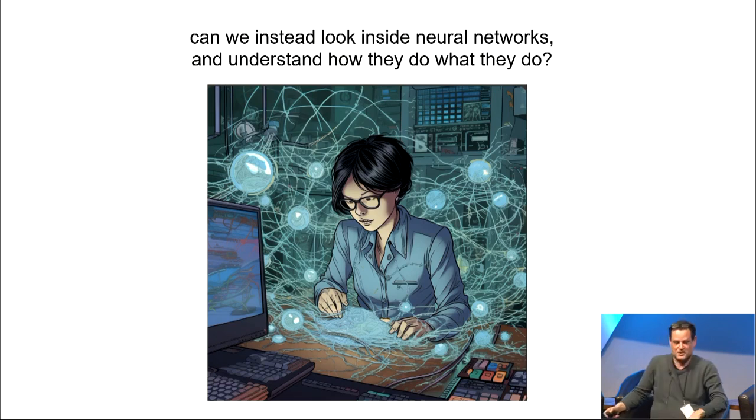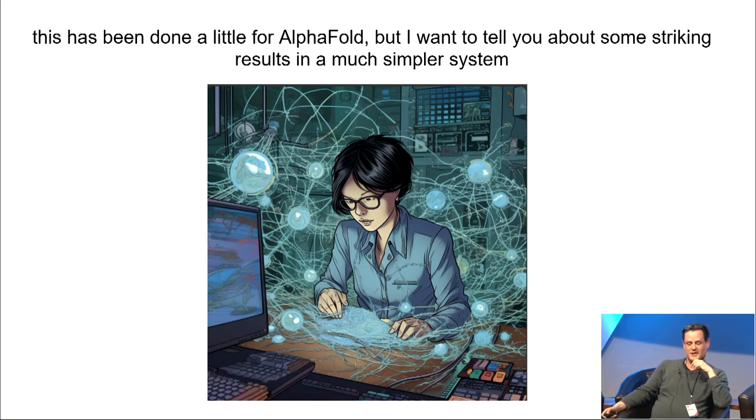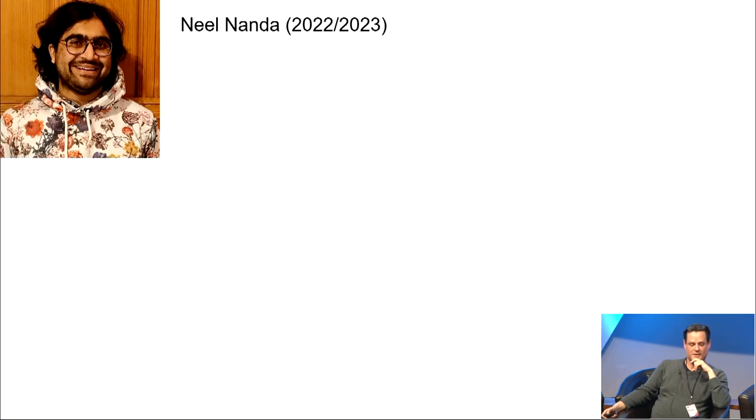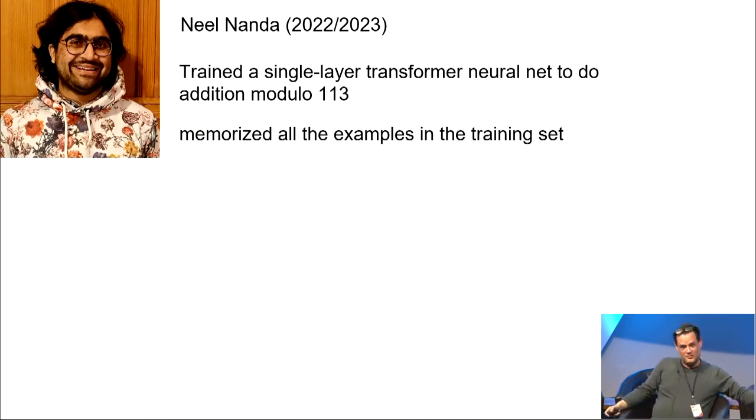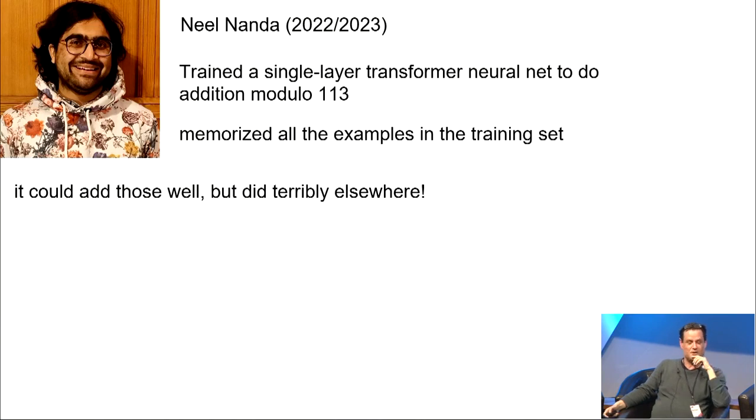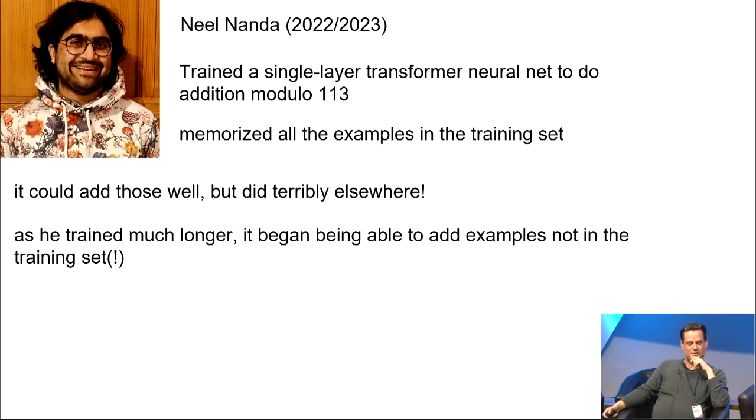I will finish with just this question. Can we instead look inside neural networks and understand how they do what they do? It's only... It's been done a little bit for AlphaFold, but I want to tell you about some striking results in a much simpler system done by Neil Nanda, now at DeepMind. He was independent at the time. He trained a very simple, single-layer transformer neural net just to add two numbers, modulo 113. And the first thing the net did when it was learning was it just memorized all the examples in his training set, obvious thing to do. It could add those very well, but it did terribly on everything else, just produced kind of random garbage as output. But as he kept training, without changing his training set, he began being able to add examples which were not in that training set. Somehow, with no additional data, it was learning how to add.